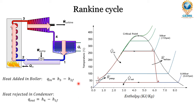In heat added, it is H3 minus H2F because the higher enthalpy is at point 3 and lower enthalpy is at point 2. The subscript F means fluid — point 2 is in the fluid (liquid) position, not in the gas phase. At the same time, H4 minus H1F: H4 is in the wet region, but H1 is on the saturated liquid line, so it is represented as H1F.